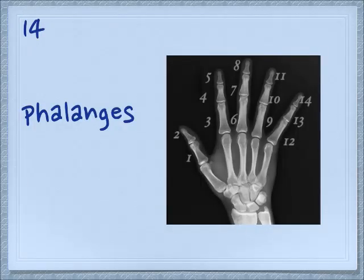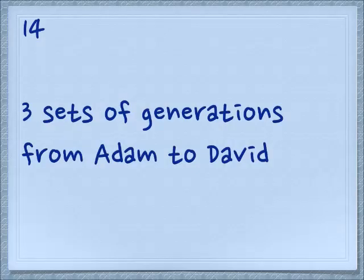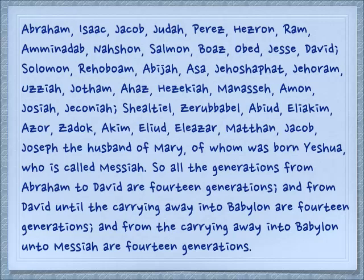Now if we add the Yud (10) and the Dalet (4), together we get 14. Here's an interesting thing about your hand: the little bones in your fingers are called phalanges — each one is a phalanx — and you have 14 of them in each hand. It is written in the genealogy of Messiah that there are three sets of 14 generations from Adam to Yeshua. If you count from Abraham through David, you will find 14; and if you count Solomon through Jeconiah, you will find 14.